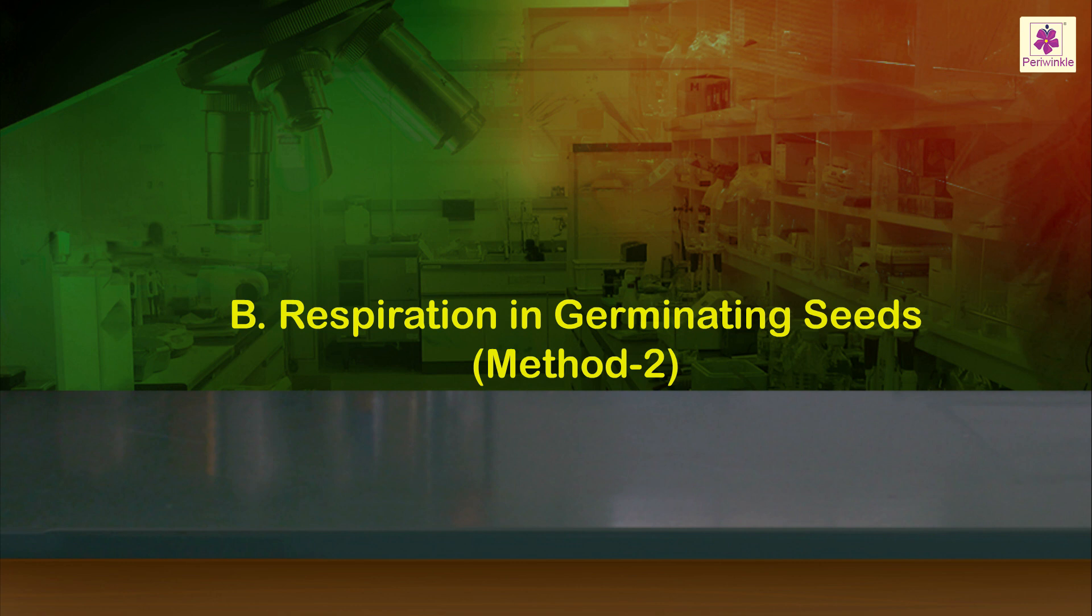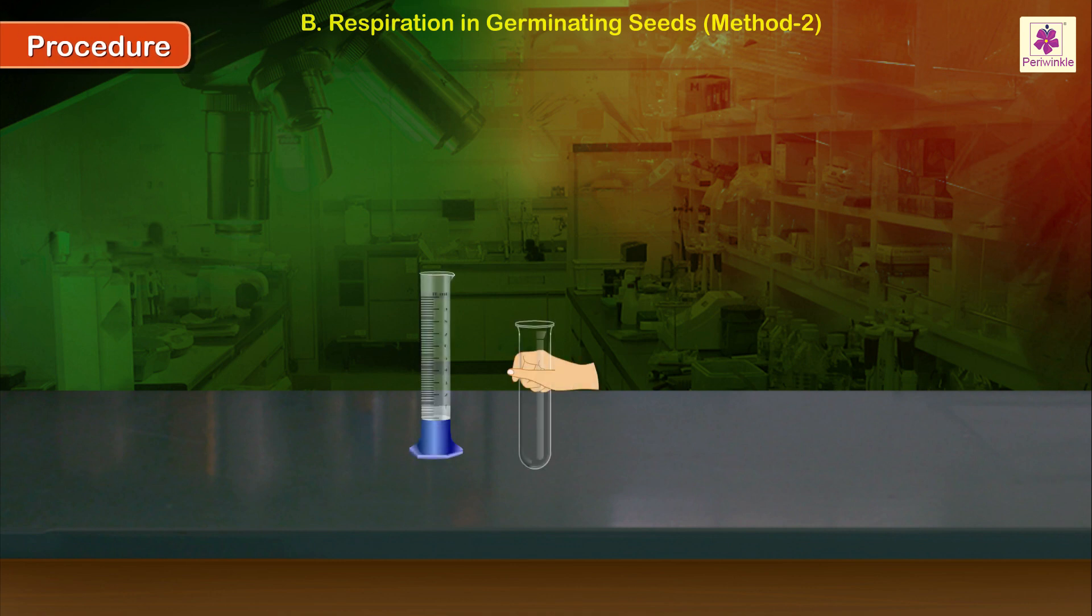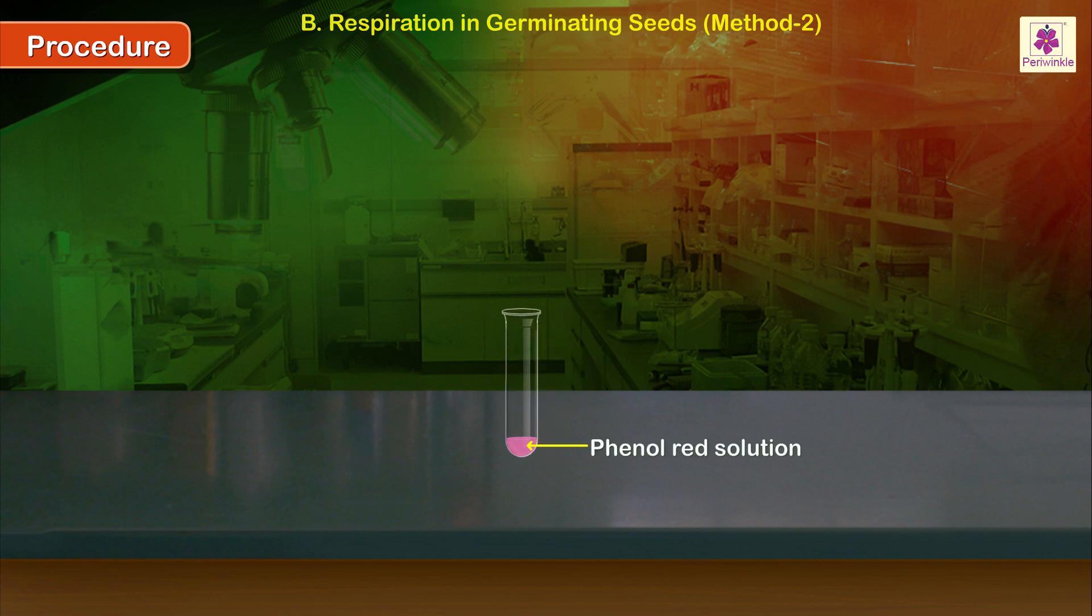Respiration in germinating seeds, Method 2. Procedure: Take 1 ml water in a test tube. Add two drops of phenol red indicator to it and shake. Observe and note the color of the solution.